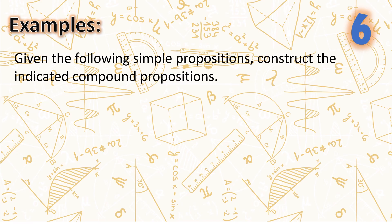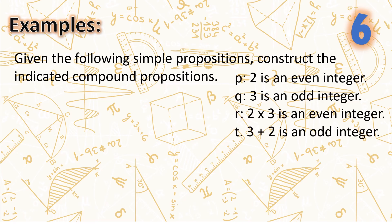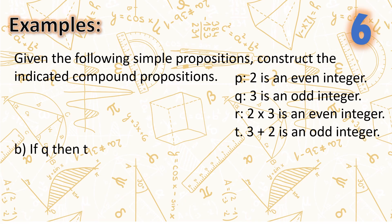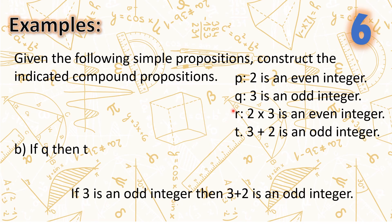Given the following simple propositions, construct the indicated compound propositions. P: '2 is an even integer.' Q: '3 is an odd integer.' R: '2 times 3 is an even integer.' T: '3 plus 2 is an odd integer.' Letter A: not T — we say '2 is not an even integer.' Letter B: if Q, then T — we say 'if 3 is an odd integer, then 3 plus 2 is an odd integer.'